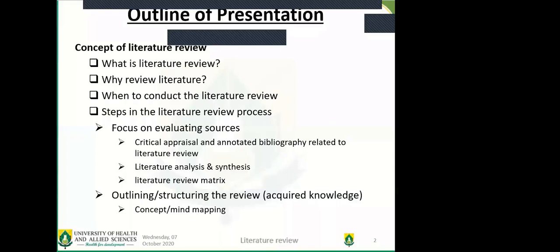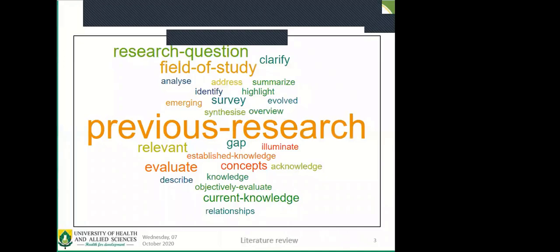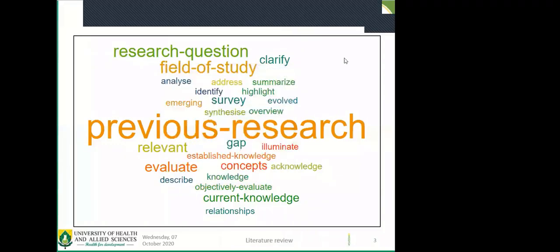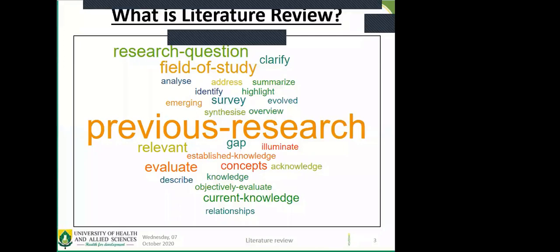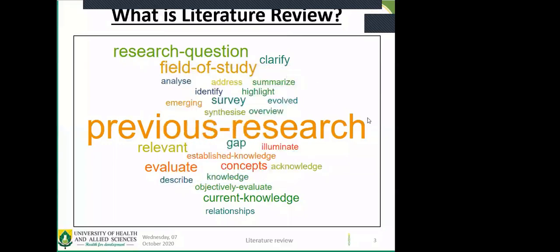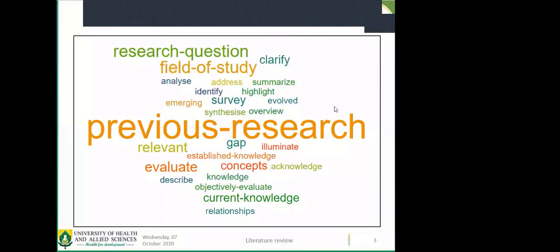Rather than going into a definition of literature review, I tried to look at the various words that have been used to describe it. The word cloud you are seeing gives you an idea of the kinds of things that go into literature review. The biggest, boldest words from the cloud tell you how frequently they were mentioned in several definitions. Of course, literature review is about previous research — that is the boldest term — meaning we are going to be dealing with things others have already done. Research question is also very important, meaning your review must be answering the research question you have posted.